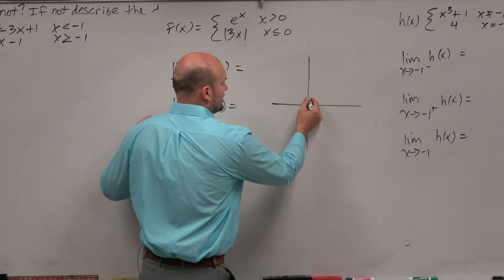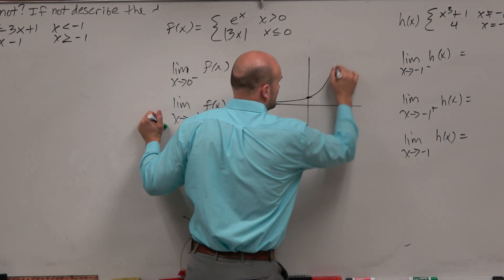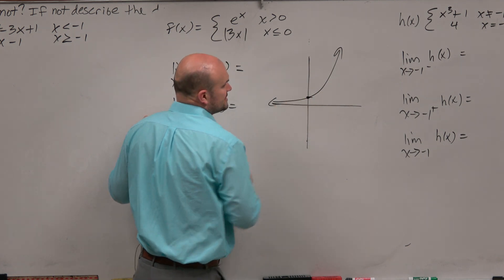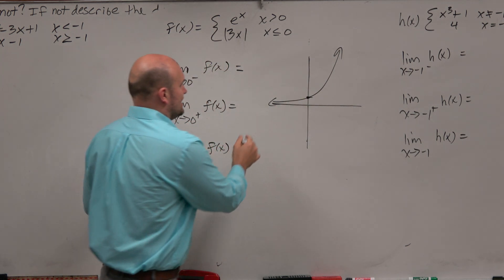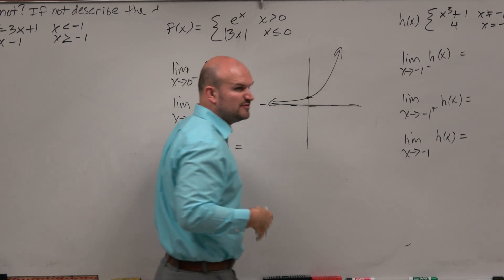First of all, we have e to the x. Hopefully you guys remember that's just the parent function. Looks something like that. Crosses at 0 comma 1. Has a horizontal asymptote, y equals 0. Fairly basic.